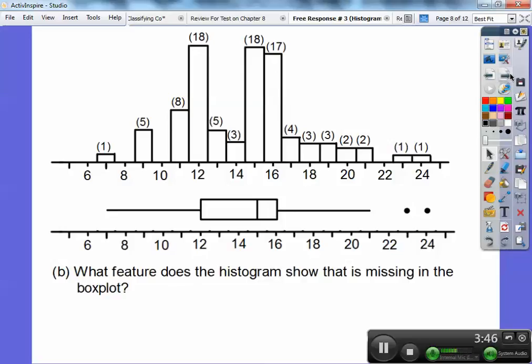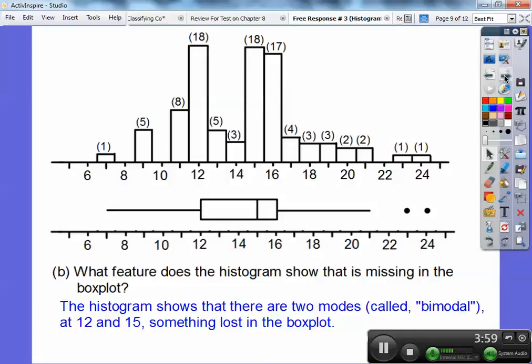So the first one said, or I'm sorry, part B said, what feature does the histogram show that is missing in the box plots? Well, I can see in the histogram there's two modes right here. And I can't see the modes in here. So I'm missing the bimodal part in the box plot. So the histogram shows that there are two modes or it shows that it's bimodal with the 12 and 15 and that's being lost in the box plot right there.